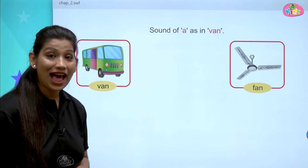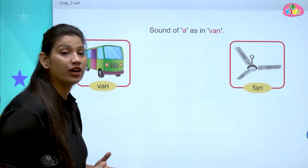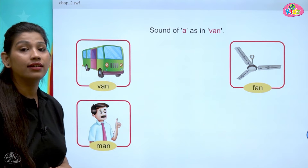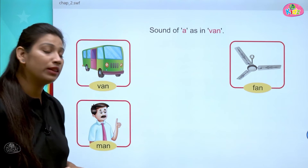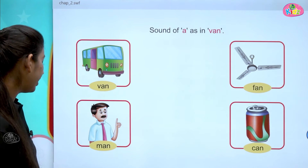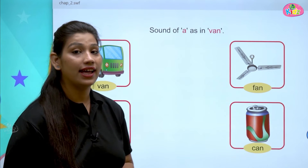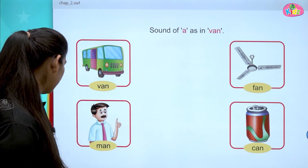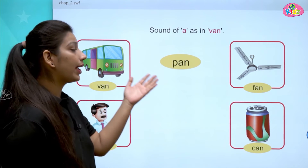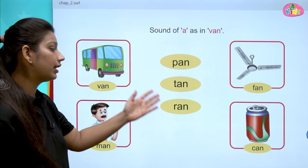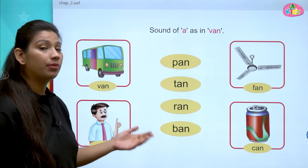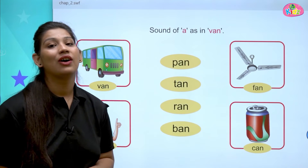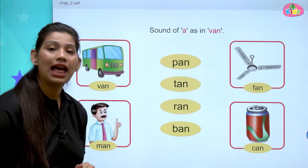Next is F, A, N — Fan. F says F, A, N — Fan. After Van, you can see M, A, N — Man. And the next is Can. K, A, N — Can. This is a picture of Can. All of the words are ending with the AN sound. Let us understand more words with AN sound like Pan, Tan, Ran, Ban. P, A, N — Pan. T, A, N — Tan. R, A, N — Ran. B, A, N — Ban. All of the words are with AN sound.